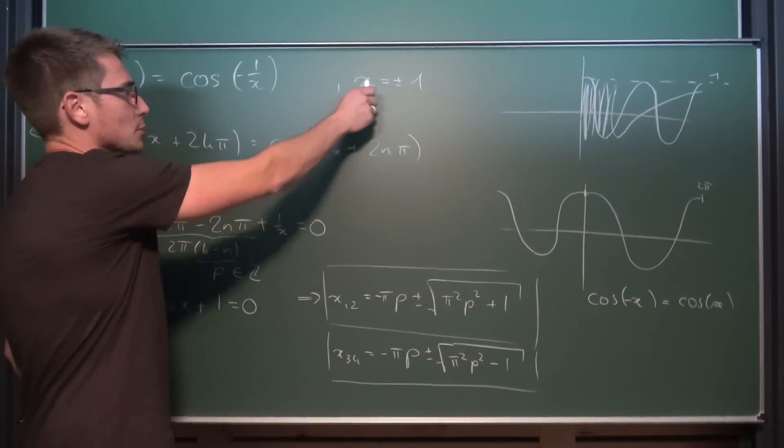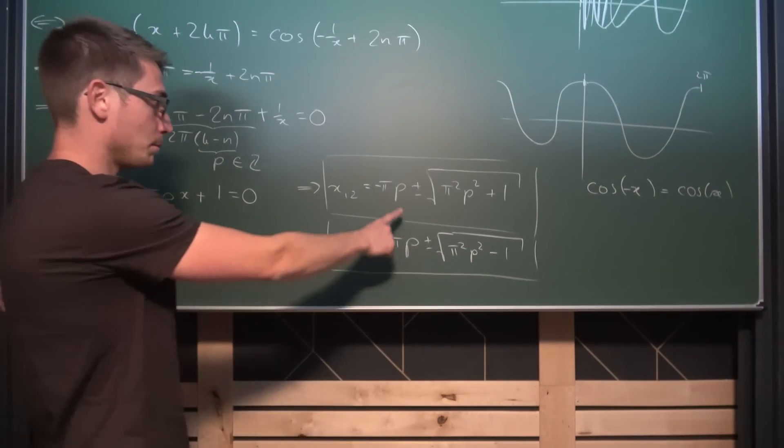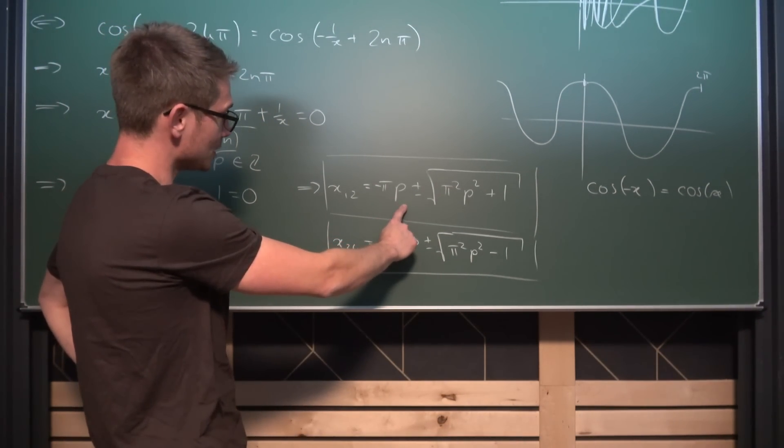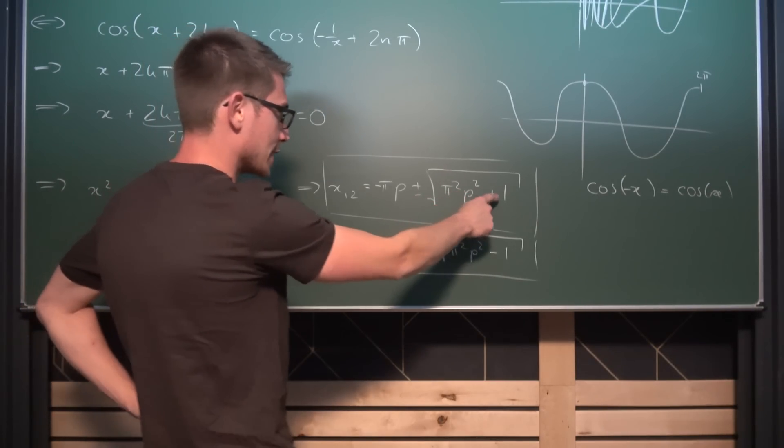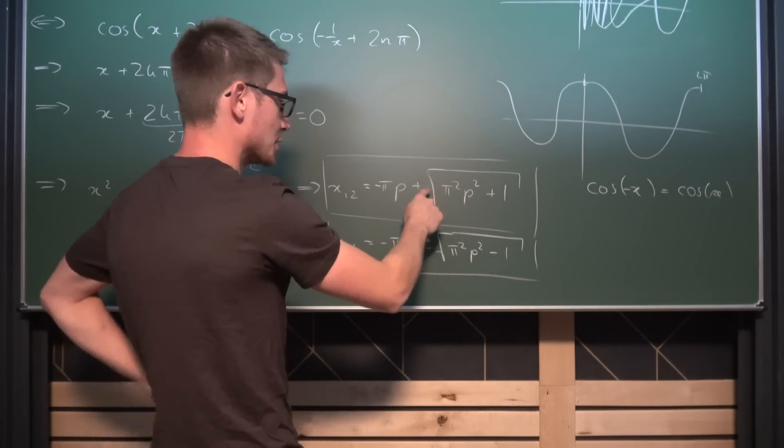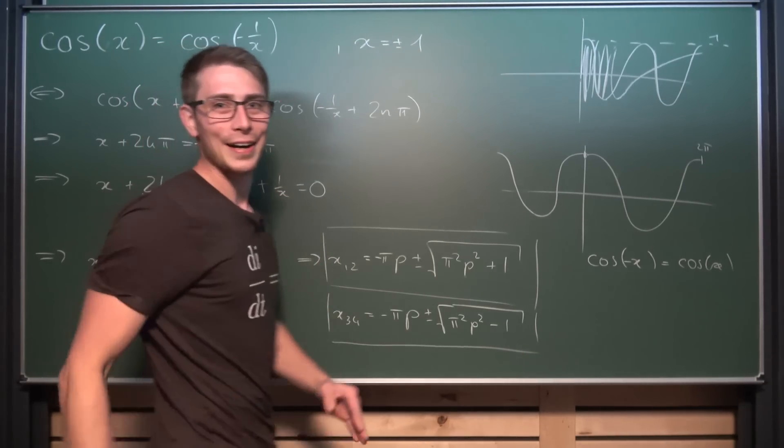And you get our integer solutions out when putting p being equal to zero into here. Then this part vanishes, this right here vanishes too. So we get the plus or minus the square root of 1, which is plus or minus 1. Et voilà, it works out.